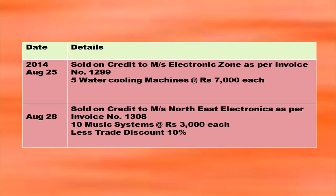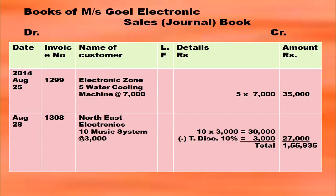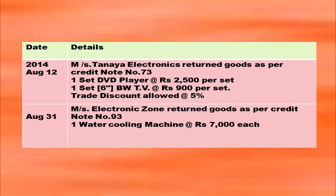Some more transactions from the same question: sold on credit to Messrs Electronic Zone — this goes in the sales book. Sold on credit to Messrs North East Electronics — also in the sales book, not in the sales returns book. The second transaction has a 10% trade discount to be deducted: 30,000 − 3,000 = 27,000 as the net amount. When all previous transactions are considered, the total in the sales book comes to Rs. 1,55,935.